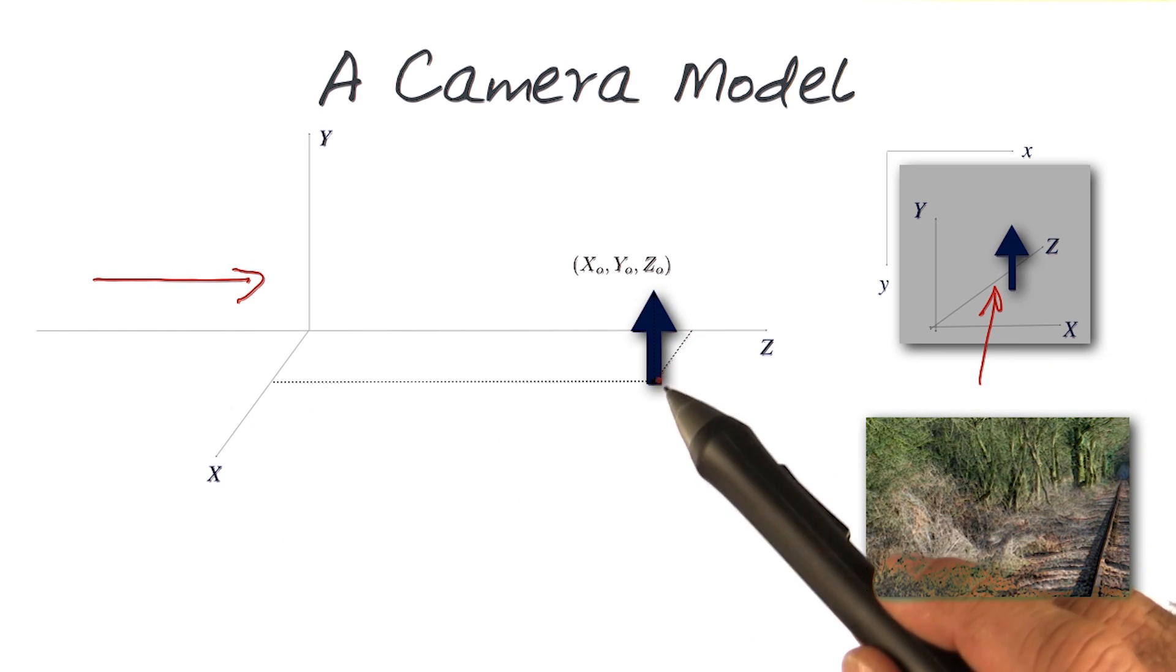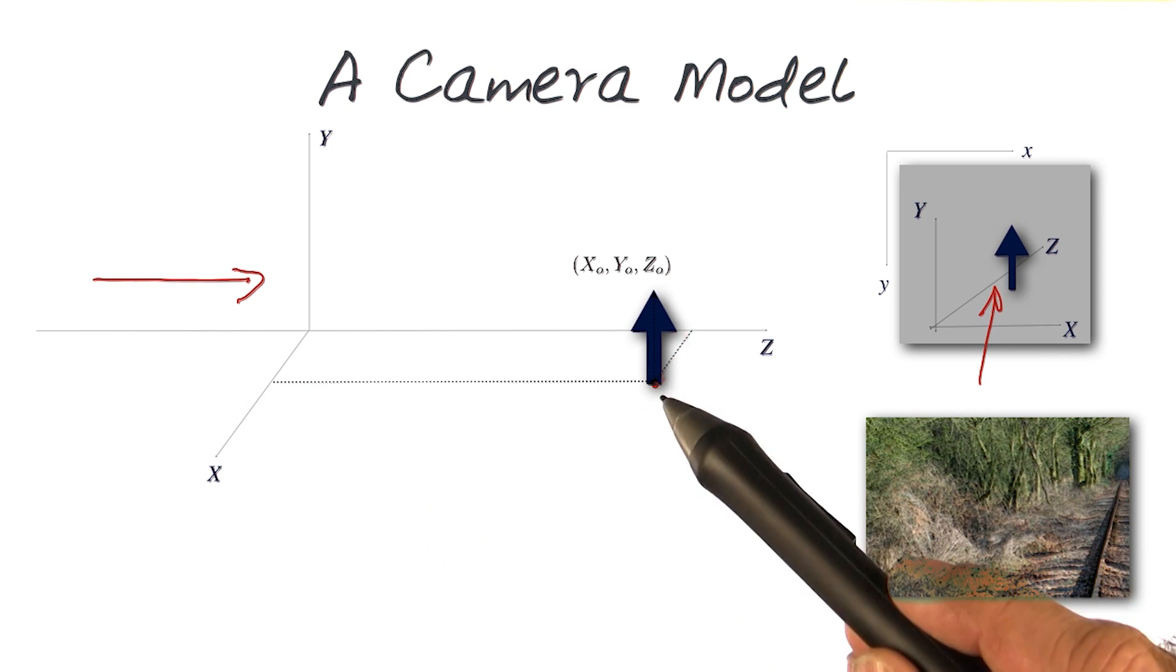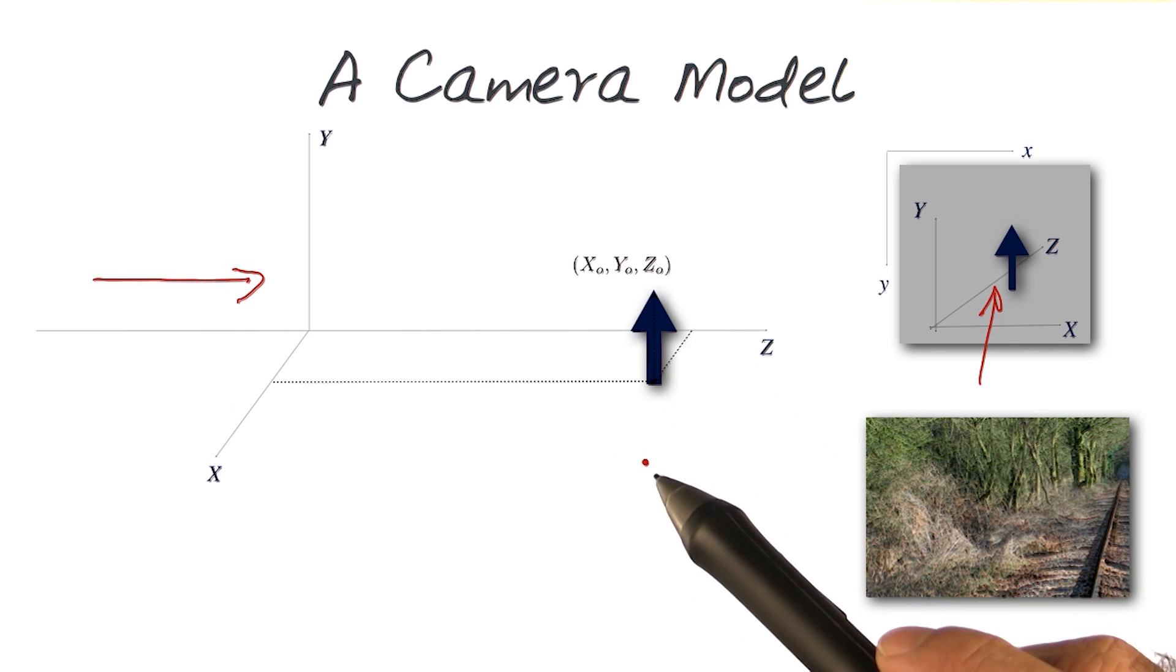So x is this, z would be this value, x is this value, and y would be how high this object is.